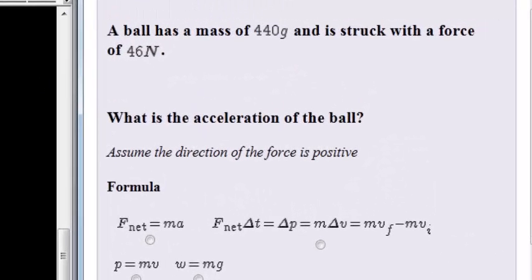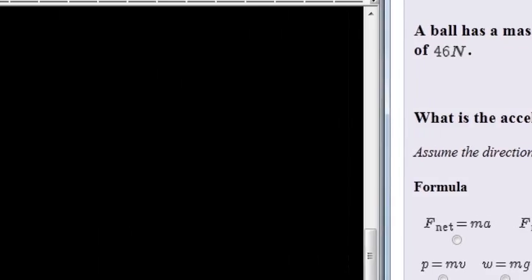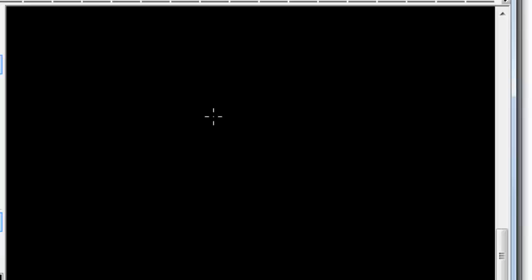A ball has a mass of 44 grams and is struck with a force of 46 newtons. So here's our ball and it is somehow struck, we don't know how, but imagine it's been kicked and we know that this is 440 grams and the force wherewith it is being kicked is equal to 46 newtons.